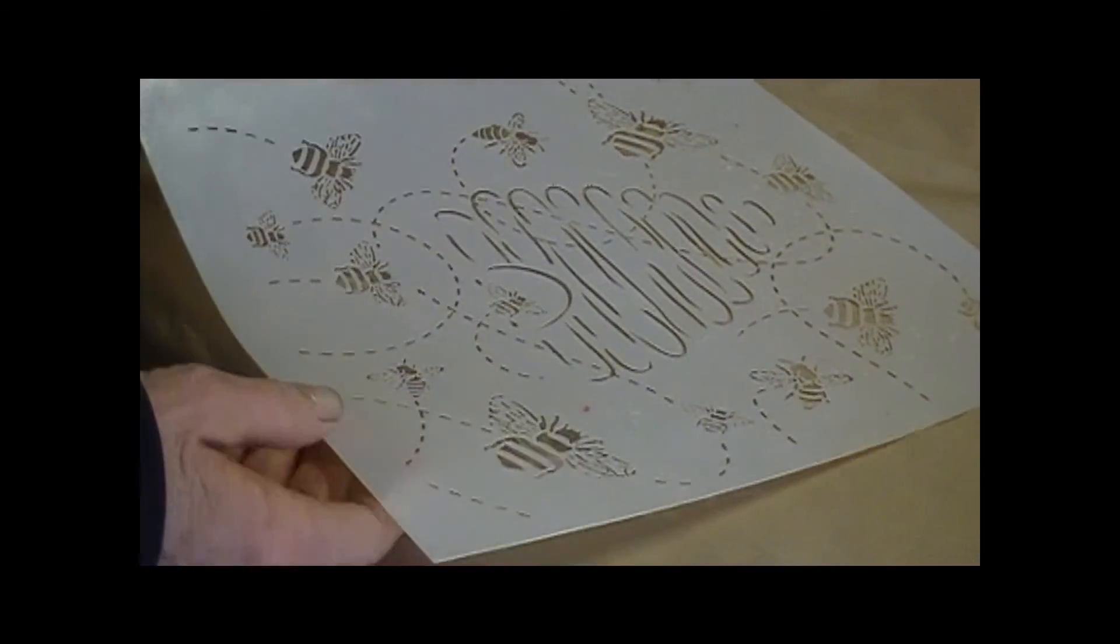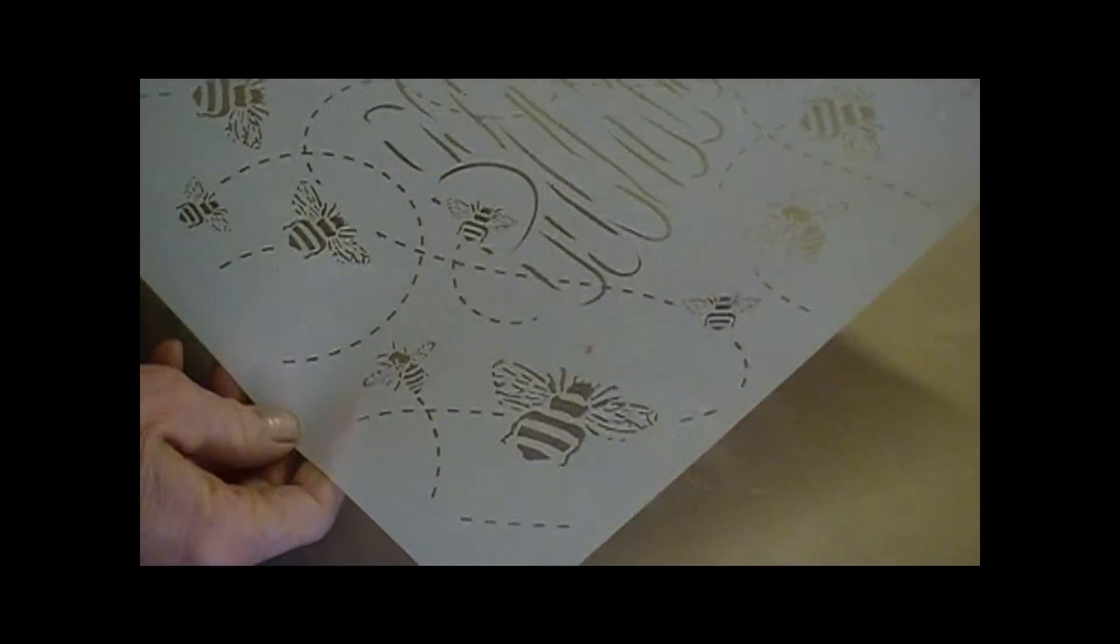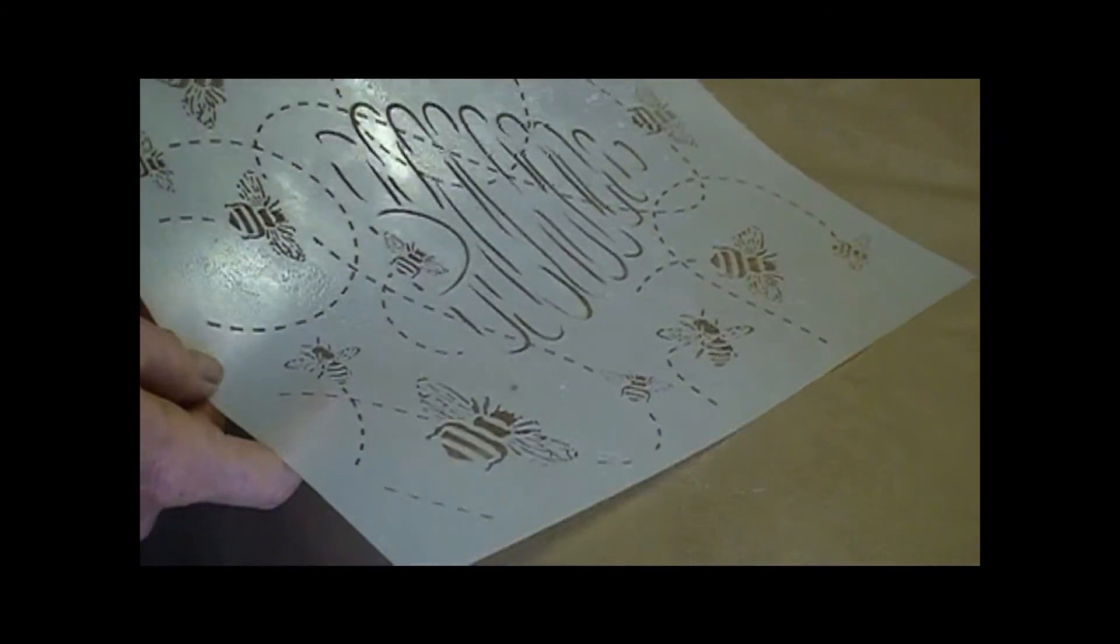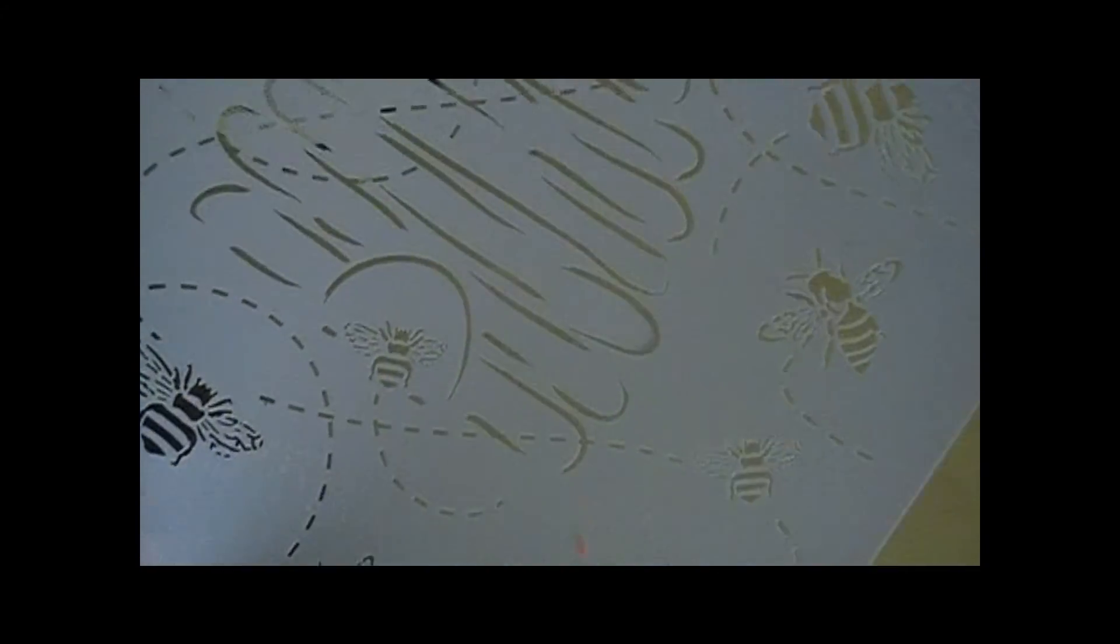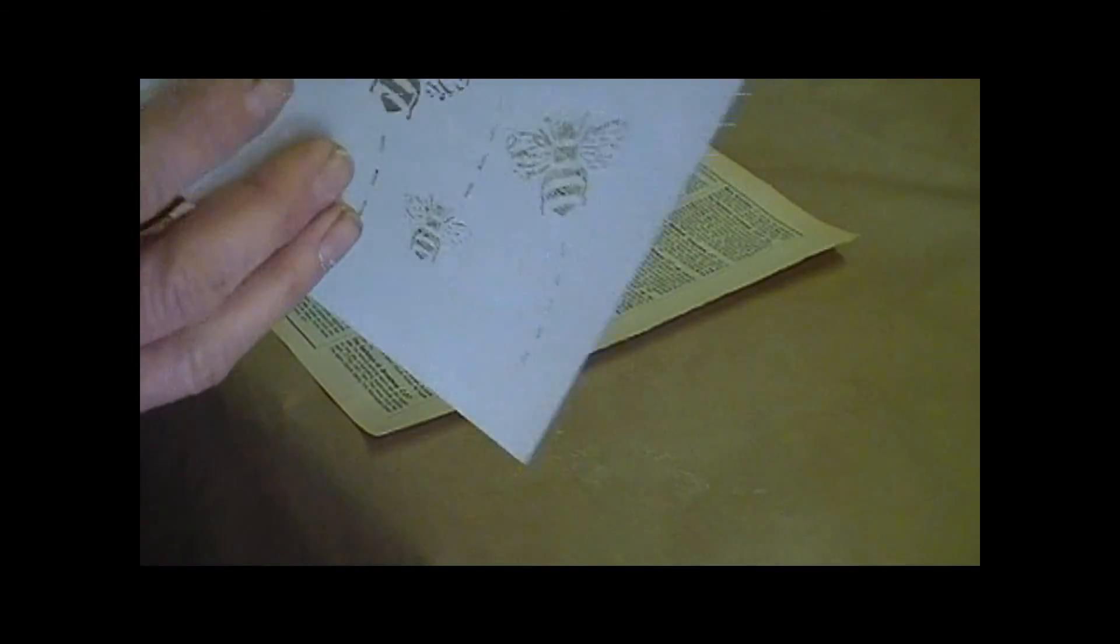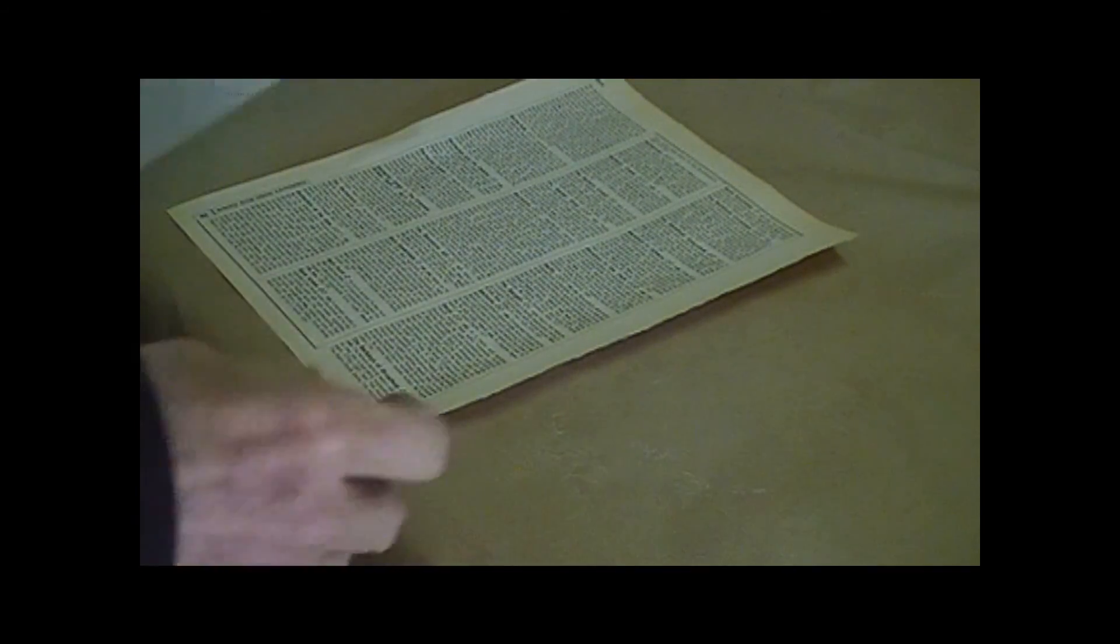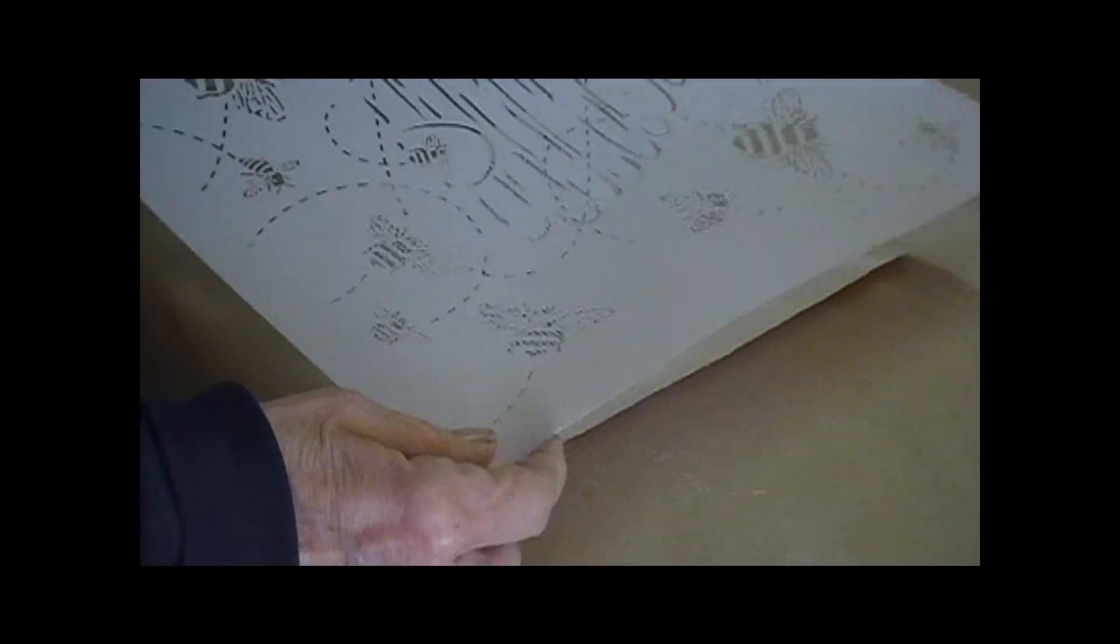Okay, it looks like our stencil is tackified. It's pretty sticky. It's clear but it's sticky. So what we're going to do is show how we can just turn this over and simply press it down on a piece of paper.